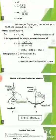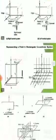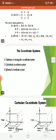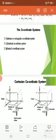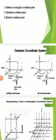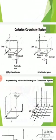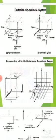Before going to vector multiplication, we need to understand the coordinate system, because knowing the coordinate system makes it easier to understand vector products. There are three types of coordinate systems: Cartesian coordinate system, cylindrical coordinate system, and spherical coordinate system. In Cartesian, the coordinates are X, Y, and Z. There are right-handed and left-handed systems. In the cylindrical coordinate system, we use R, phi, and Z. In the spherical coordinate system, we use R, theta, and phi as coordinates.